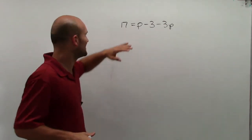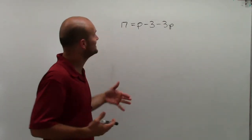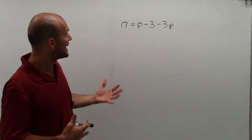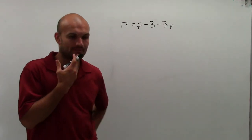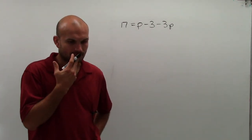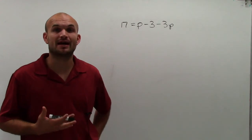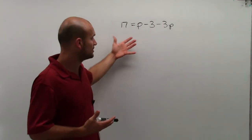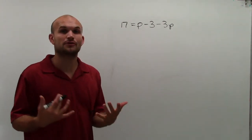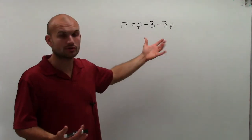Whoa, this is a little bit better, right? All right, so I have 17 equals p minus 3 minus 3p. And our p is going to be our unknown value. So what we're going to try to do for this problem is we're going to need to find the value of p that makes this equation true.